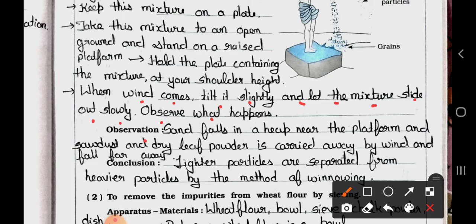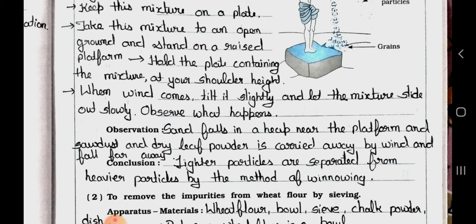Observation: Sand falls in a heap near the platform and sawdust and dry leaf powder is carried away by wind and falls far away. Conclusion: Light particles are separated from heavier particles by the method of winnowing.